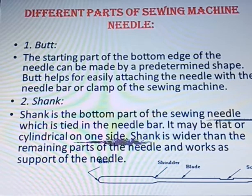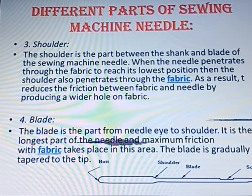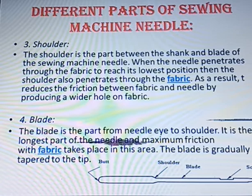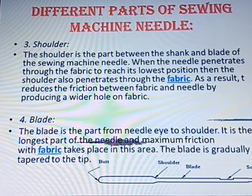Then we have the shoulder. The shoulder is the area between the shank and the blade from which the needle penetrates through the fabric to reach its lowest position. The shoulder also penetrates the fabric as it helps to reduce the friction between fabric and needle.